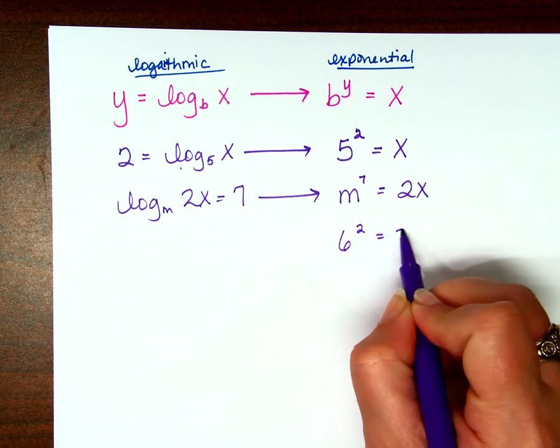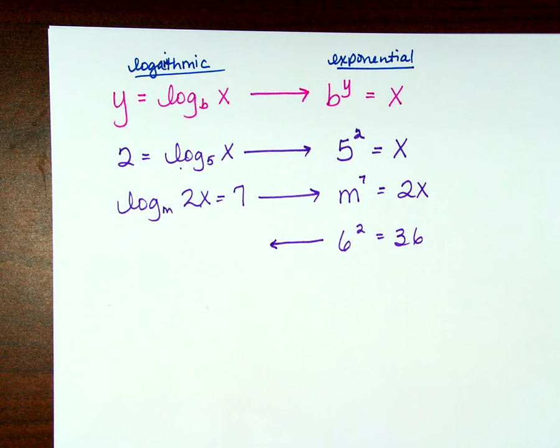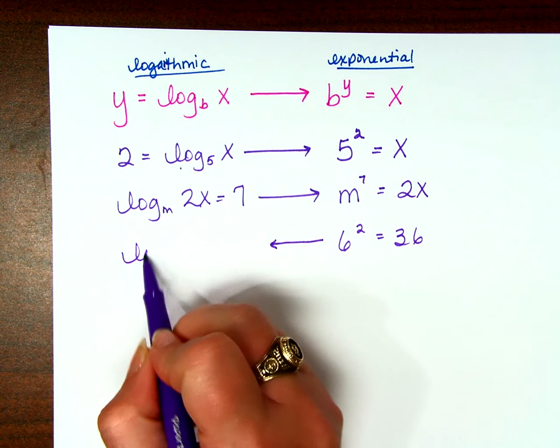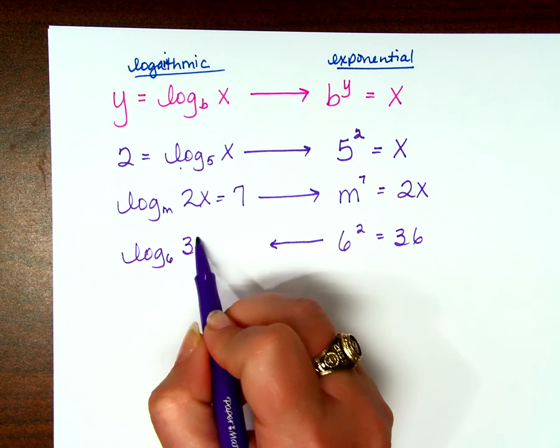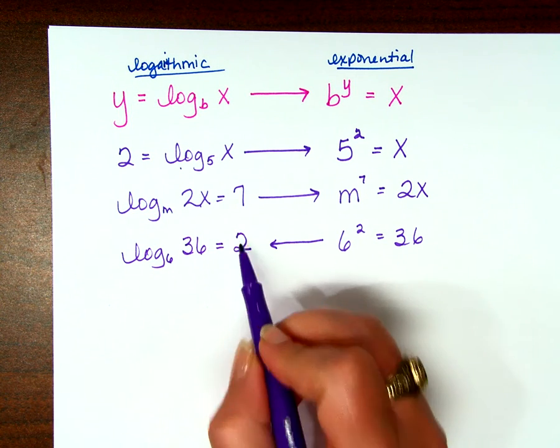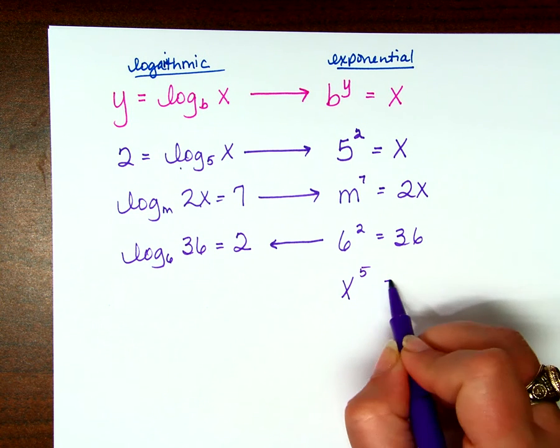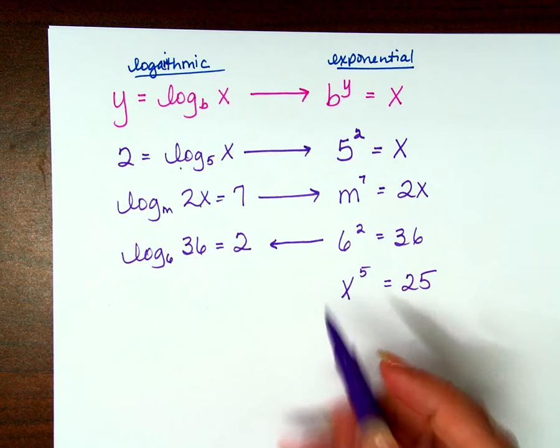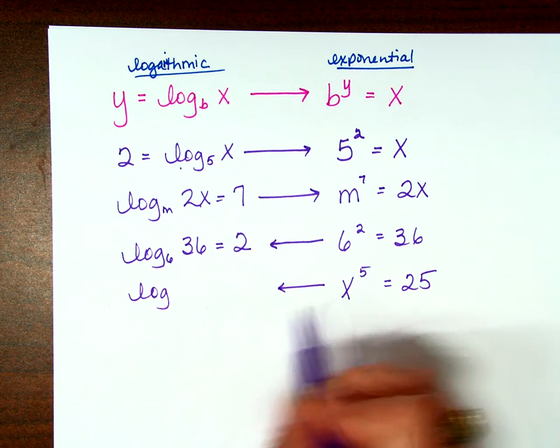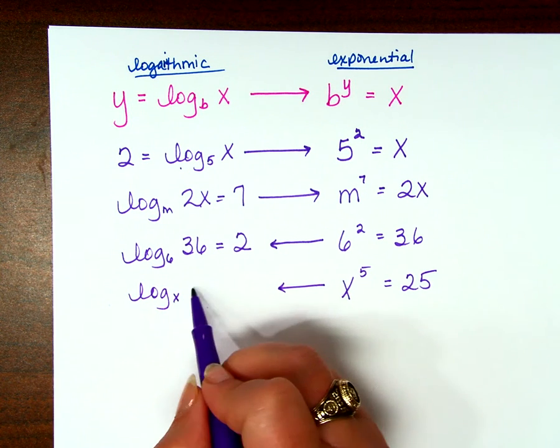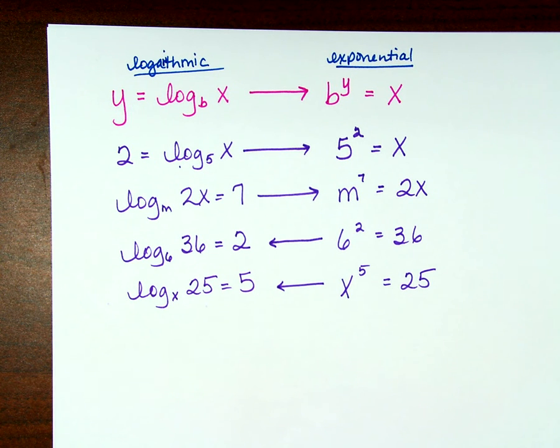6 squared equals 36. Can you write that in logarithmic form? The base here is the base here, of 36 equals the exponent. x to the 5th equals 25. Can you write that in logarithmic form? Log base x of 25 equals the exponent, 5.